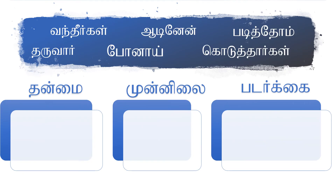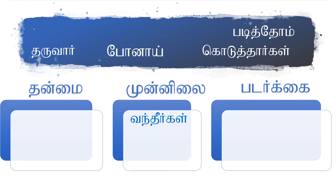Now let's see if we can identify the position from the verb endings. Vandirkal means 'you came.' It ends with Eishhal, which indicates the subject is Neengal, so it is Munnile. Aadi neen means 'I danced.' It ends with Aen, which denotes the subject is Naan, so it is Tanme.